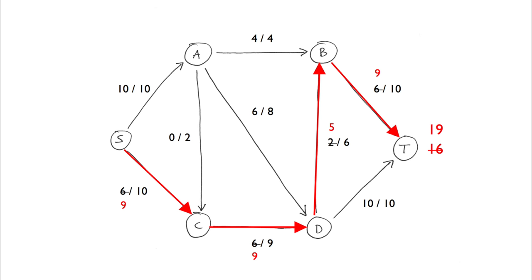Looking at S to A, we can see the path is full. Now looking at SC, we notice we have a capacity of 1. However, the forward edge CD is full, and the backward edge CA is empty, so we cannot augment the path. Since we cannot find a path from S to T, our algorithm is done, and our final flow value is 19.